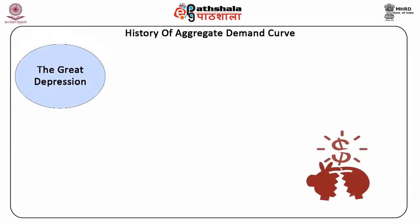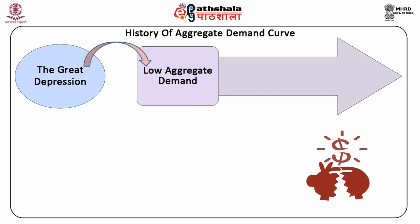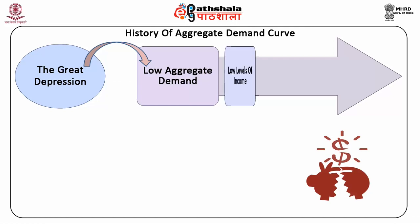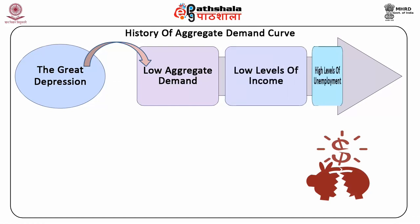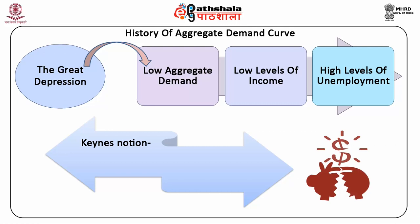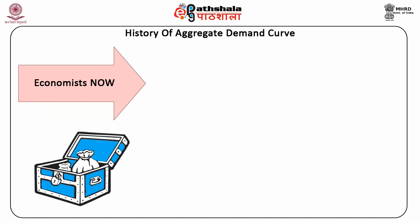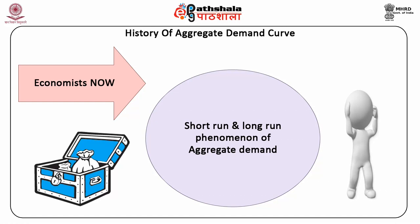However, after the Great Depression from 1929 to 1933, Keynes proposed that the reason behind the Great Depression was low aggregate demand in the economy, which created low levels of income and high levels of unemployment. Keynes came up with the notion that demand creates its own supply. Economists have now reconciled these two versions into short-run and long-run phenomena of aggregate demand.